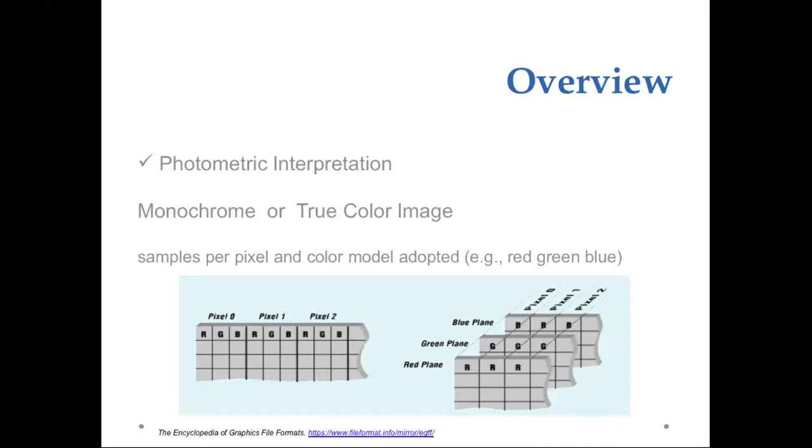Photometric interpretation tells us if the image is monochrome or a color image, or in other words, if the color is or is not stored in the image pixel values. In the case of monochrome images, we have one sample per pixel. But if the image is in color, we need to know the color model used to codify the color information, the number of samples per pixel, and if the pixel data are stored color by pixel or color by plane.